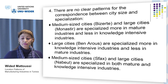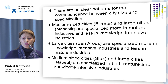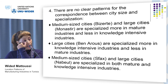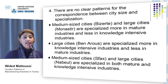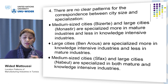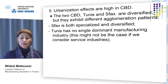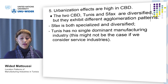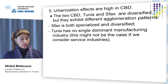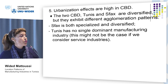First, medium-sized cities such as Bizerte and large cities such as Monastir are specialized more in mature sectors and less in knowledge-intensive industries. The second pattern: large cities such as Ben Arous are specialized more in knowledge-intensive industries and less in mature industries. The last pattern: medium-sized cities such as Sfax and large cities such as Nabeul are specialized in both mature and knowledge-intensive industries. It is well known in the literature that urbanization effects are high in central business districts. This is the case of Tunisia, where the two central business districts, Tunis and Sfax, are diversified. However, they exhibit different agglomeration patterns. While Sfax is both diversified and specialized, Tunis is diversified but has no single manufacturing industry. We should be cautious in drawing conclusions in general, because this might not be the case if we consider service industries.